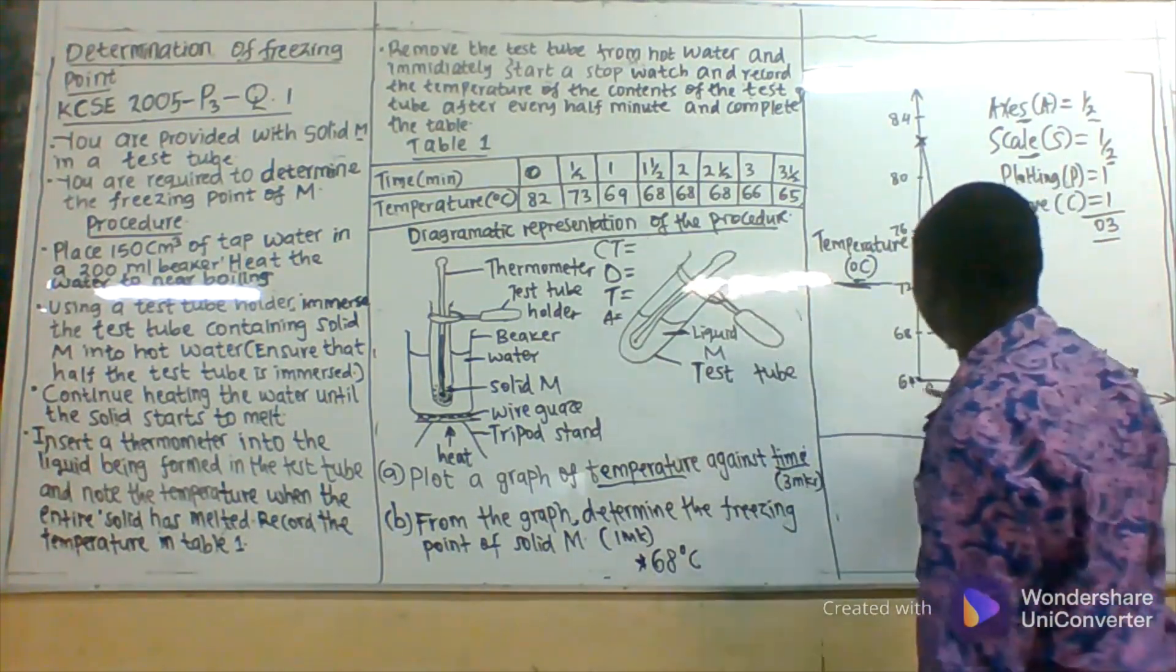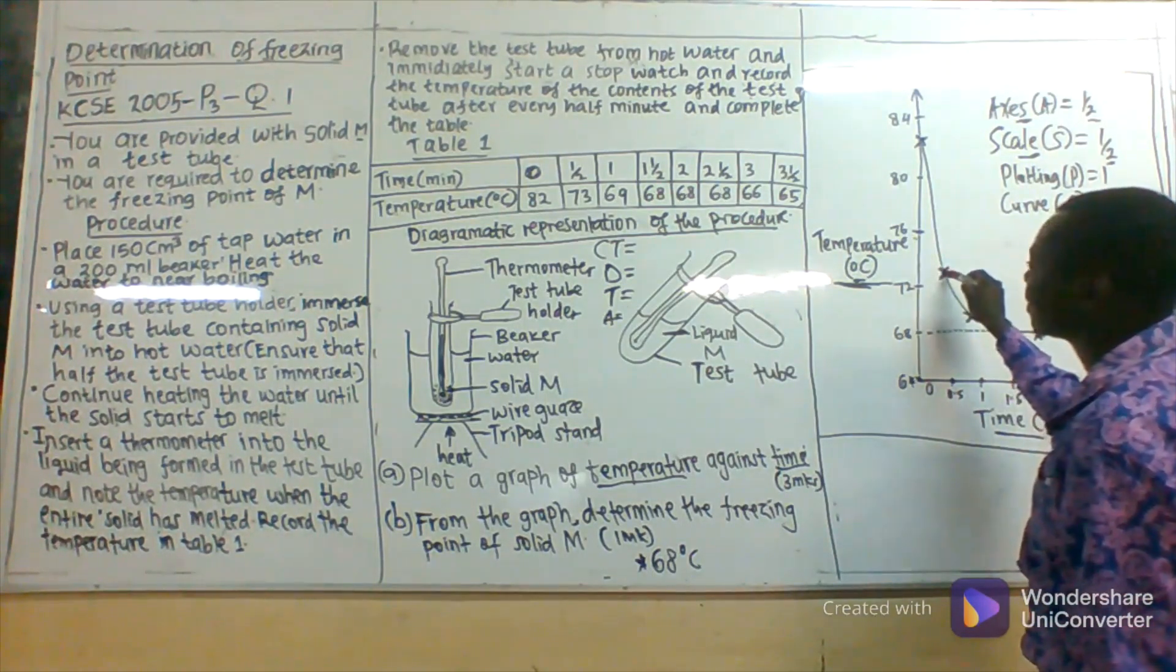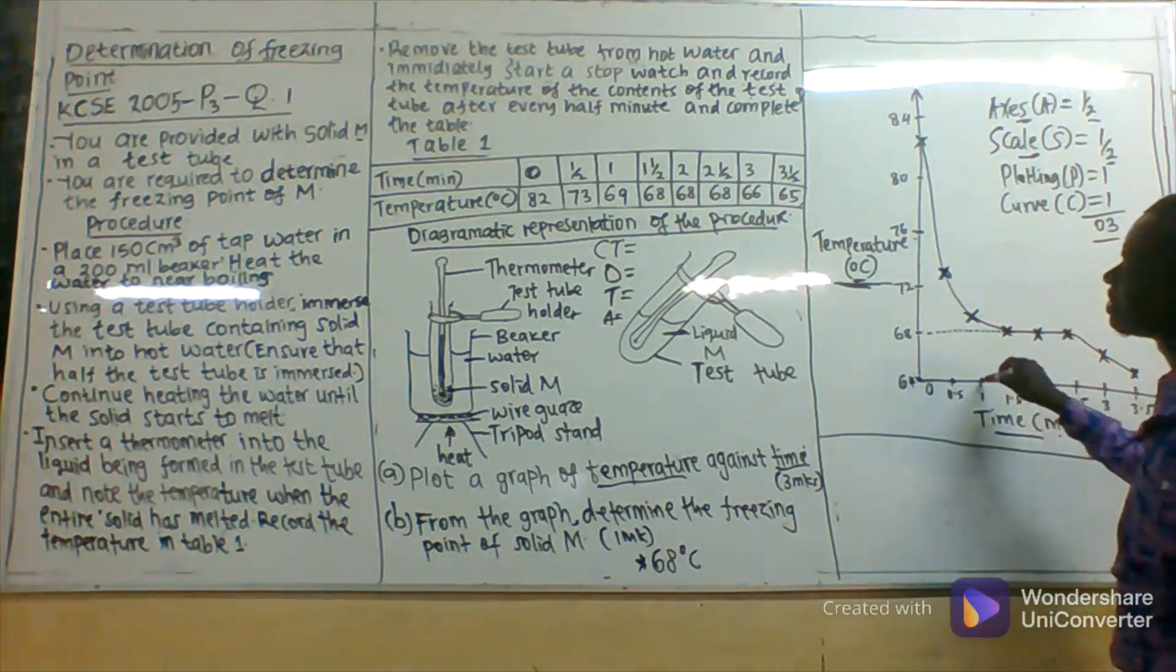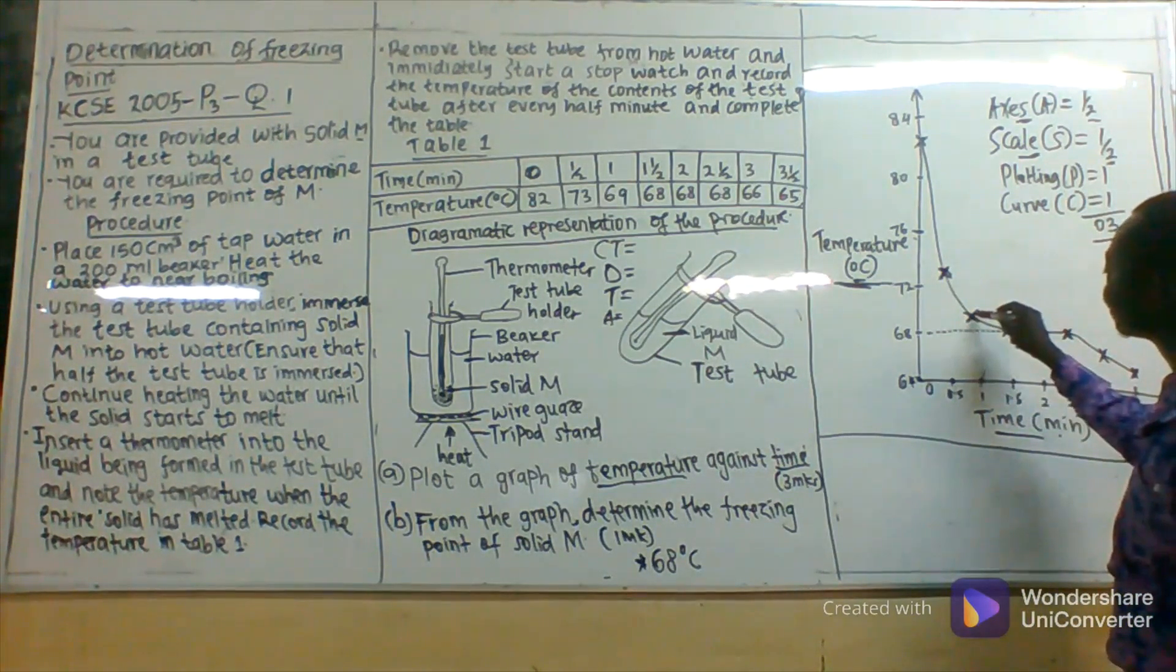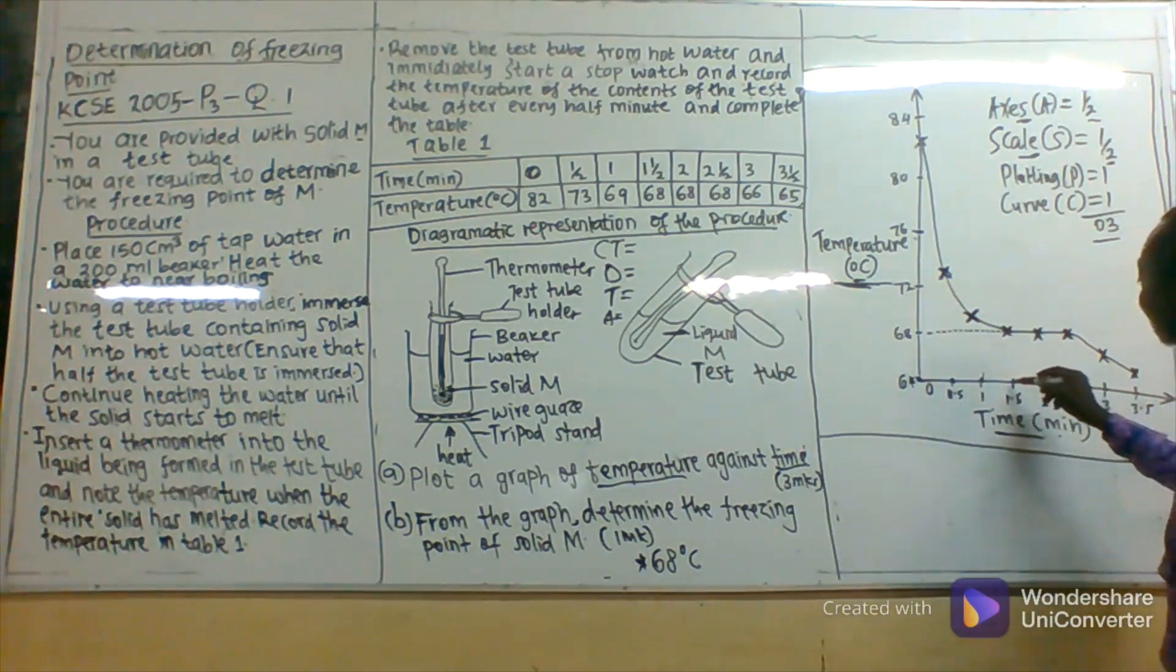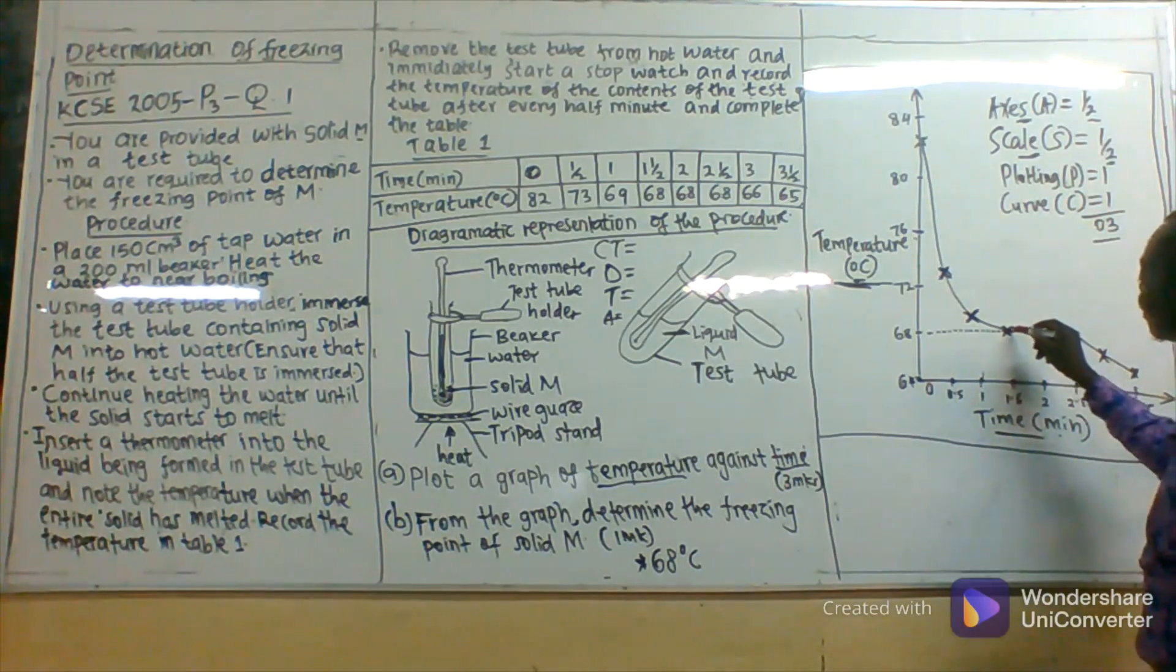When the time was 0.5, the temperature was at 73 around here. When the time was one minute, the temperature was at 69 somewhere around there. When the time was one and a half minutes, the temperature was at 68.